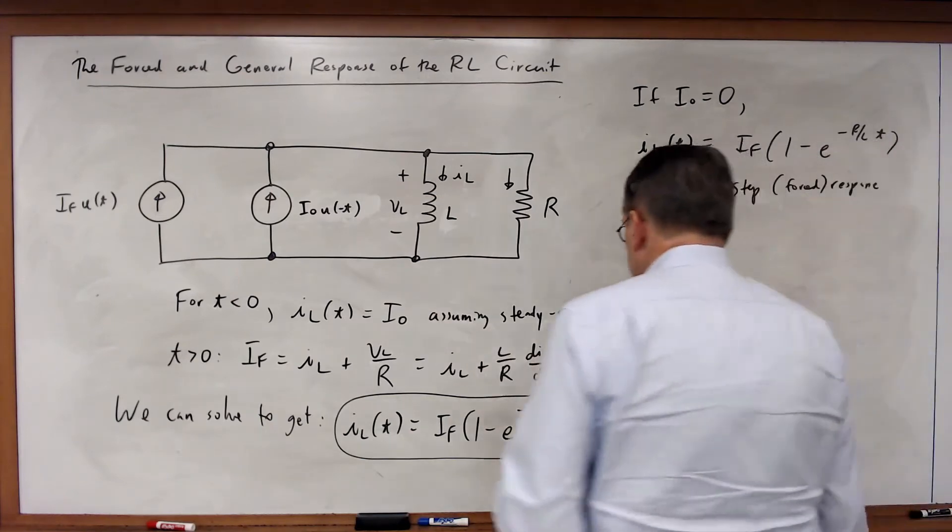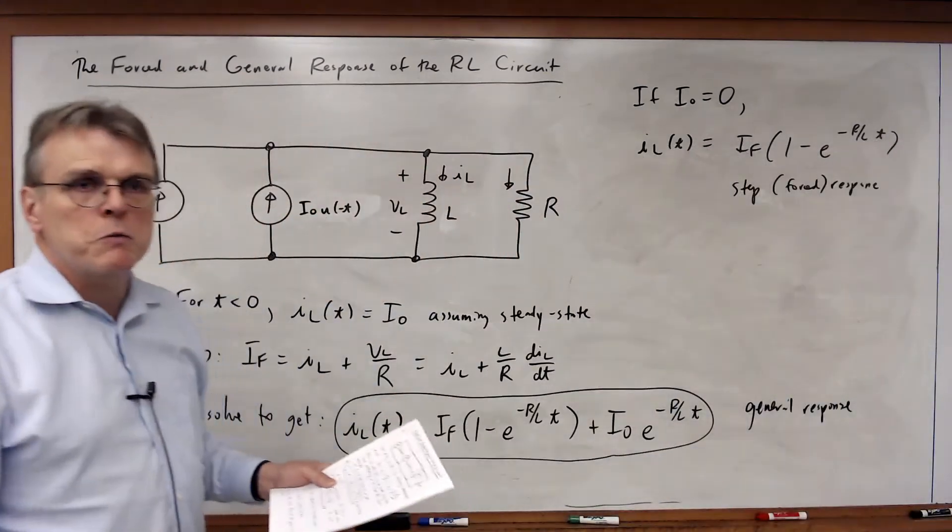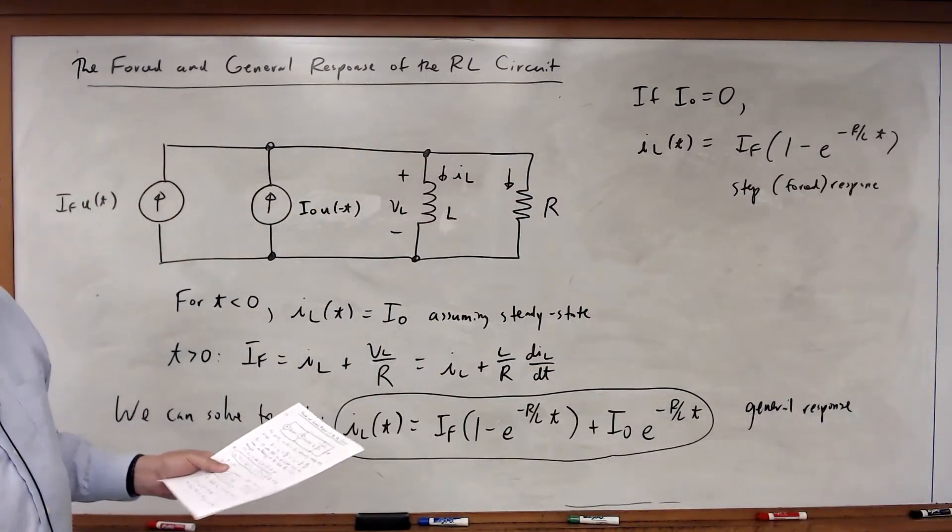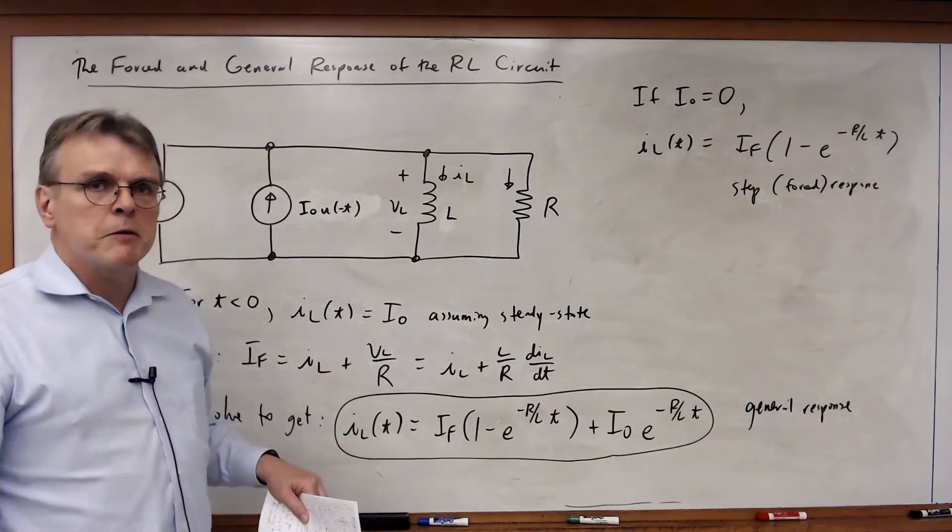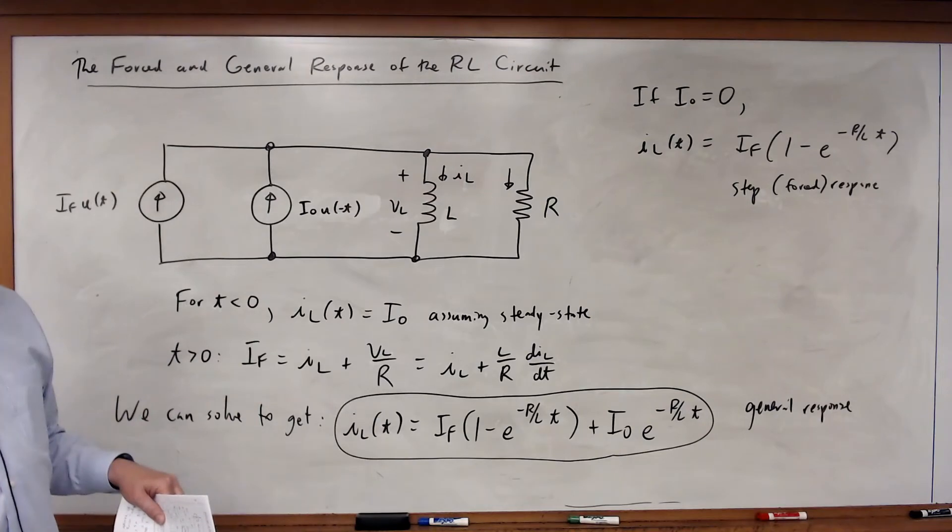So again, these equations are duals of the equations we saw before for the RC circuit. So I can just basically go ahead, and that's why I skipped all the intermediate steps, because they're identical to what you saw for the RC circuit in terms of the forms of the solutions.